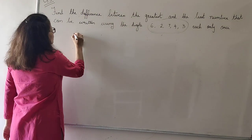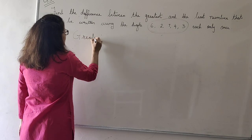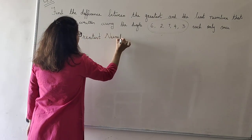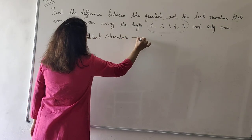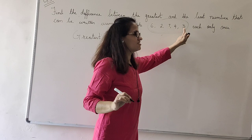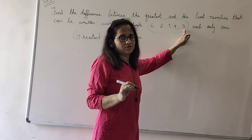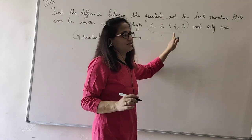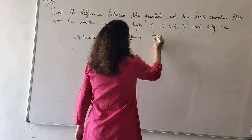Now, first we will form the greatest number. How to form the greatest number? You all have studied this in form 5. Again I repeat, when I form the greatest number, I will arrange these digits in descending order. Descending order means starting from the biggest number going to the smallest number. Here the biggest is 7,